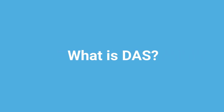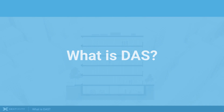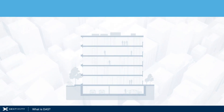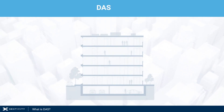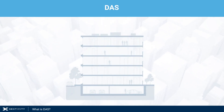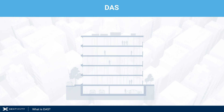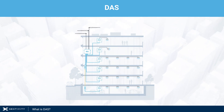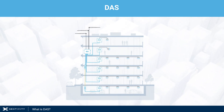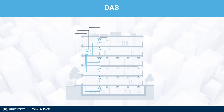What is DAS? Distributed antenna systems are almost always referred to as DAS. In simple terms, a DAS is a group of antennas placed throughout a structure or site to boost signal coverage.